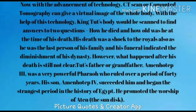With the advancement of technology, CT scan — or computed tomography — can give a virtual image of the whole body. With the help of this technology, King Tut's body would be scanned to find answers to two questions: how he died, and how old he was at the time of his death. His death was a shock to the royals, as he was the last person of his family, and his funeral indicated the diminishment of his dynasty. However, what happened after his death is still not clear.